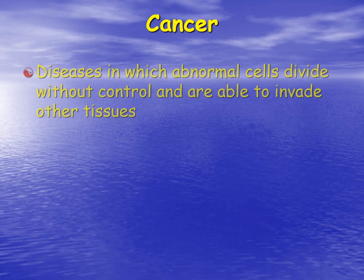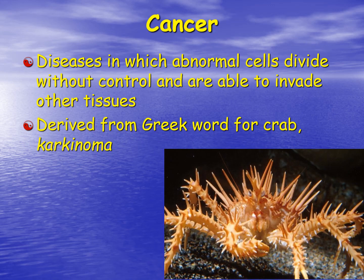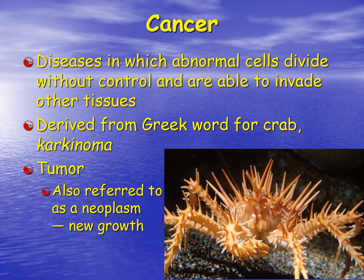What is cancer? Cancer is a disease in which abnormal cells divide without control and are able to invade other tissues. Cancer literally means uncontrolled cellular growth. It's derived from a Greek word for crab, karakonoma, and as you can see with this spiny crab, this really does give an idea of how cancer can invade surrounding tissues. The word tumor literally means growth, and can also be referred to as neoplasia, or new growth.